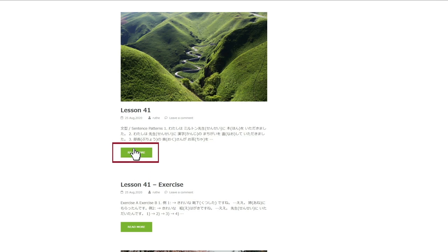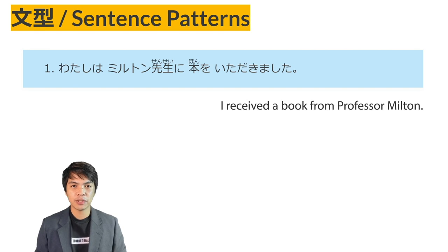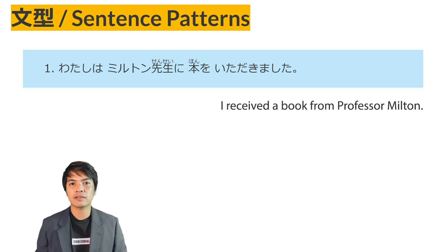Lesson 41 Sentence Patterns. Based on what we've learned in Lesson 7 and Lesson 24, this lesson is about expressions of giving and receiving of things. This lesson introduces additional expressions for giving and receiving that reflect the relationship between the giver and the receiver.